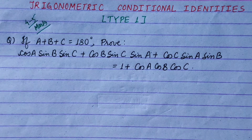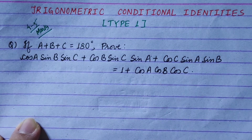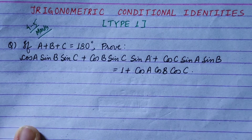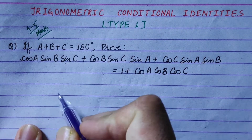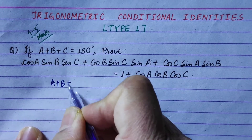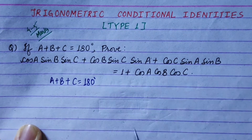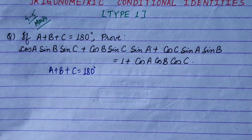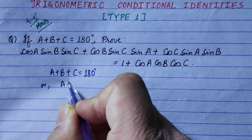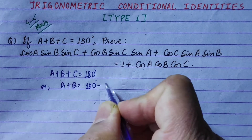We take a plus b plus c equals 180 degrees, which equals pi radians. Now, let's take the condition: a plus b plus c equals 180 degrees. The three angles satisfy this, so a plus b equals 180 minus c.